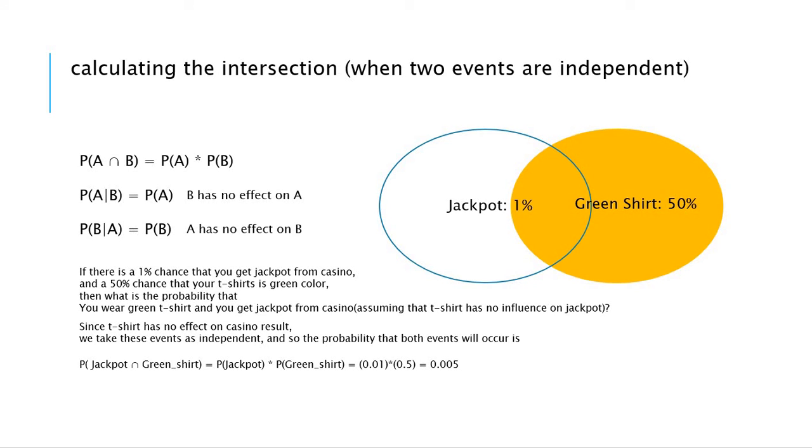When two events are independent, like the jackpot and the green t-shirt, no matter which t-shirt you wear, the jackpot probability is 1% and the green t-shirt probability is not affected by whether you get the jackpot or not.